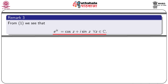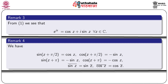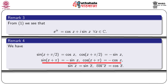We see that e^(iz) = cos z + i sin z, which follows from the definition of sin z and cos z, and this relation is true for all complex z. We also have: sin(z + π/2) = cos z, cos(z + π/2) = -sin z, sin(z + π) = -sin z, cos(z + π) = -cos z. The conjugate of sin z equals sin(conjugate of z), and the conjugate of cos z equals cos(conjugate of z).